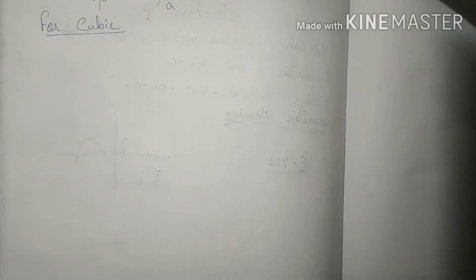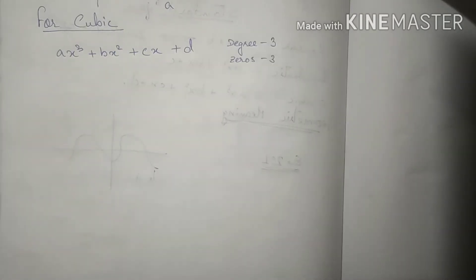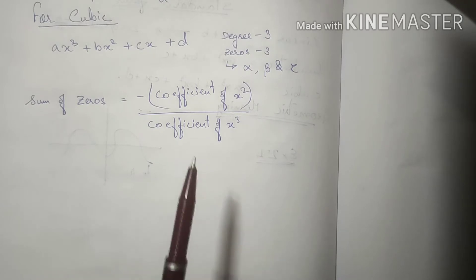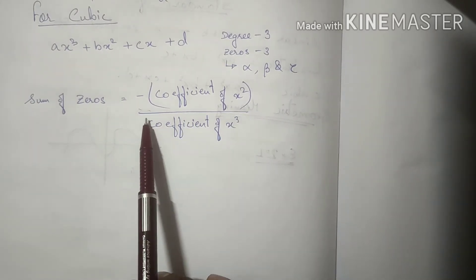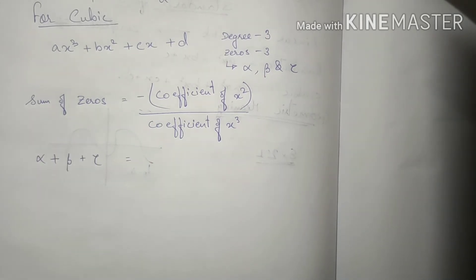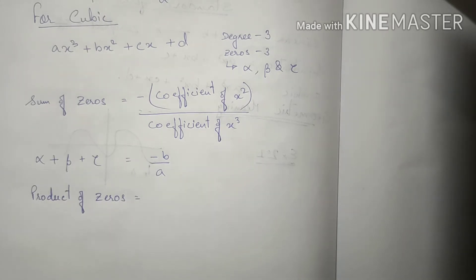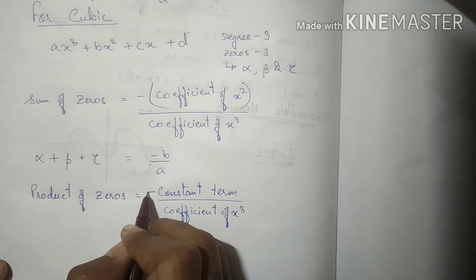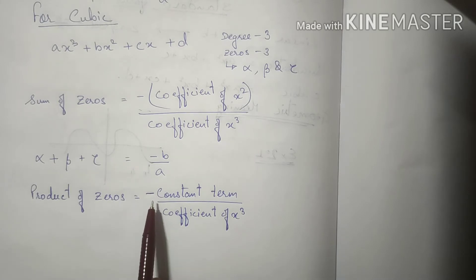The product of zeros equals the constant term divided by the coefficient of x squared. Now for the cubic polynomial — standard form has degree 3, so there are three zeros: alpha, beta, and gamma. The sum of zeros equals minus of the coefficient of the second highest power divided by the coefficient of the highest power. The product of all three zeros equals minus of the constant term divided by the coefficient of the highest power — always remember the negative sign for cubic.